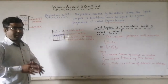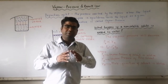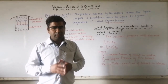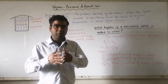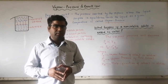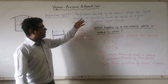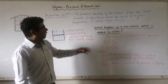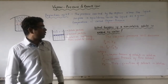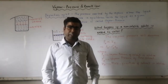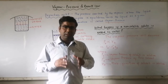This pressure exerted by the vapor is called vapor pressure. To be more precise, the definition is: the pressure exerted by vapors above the liquid surface in equilibrium with the liquid at a given temperature is called vapor pressure.